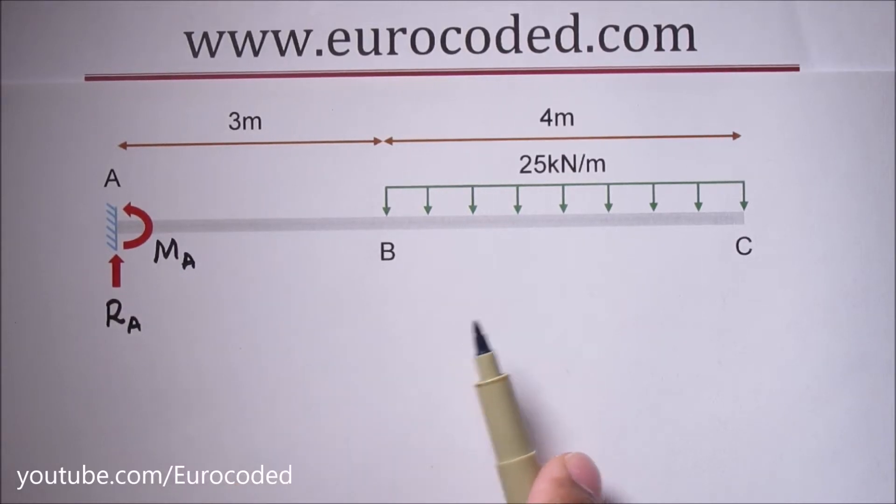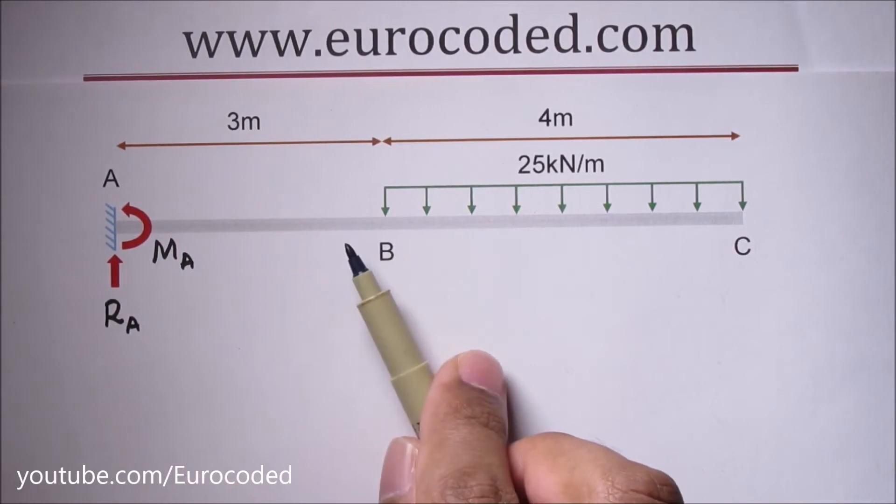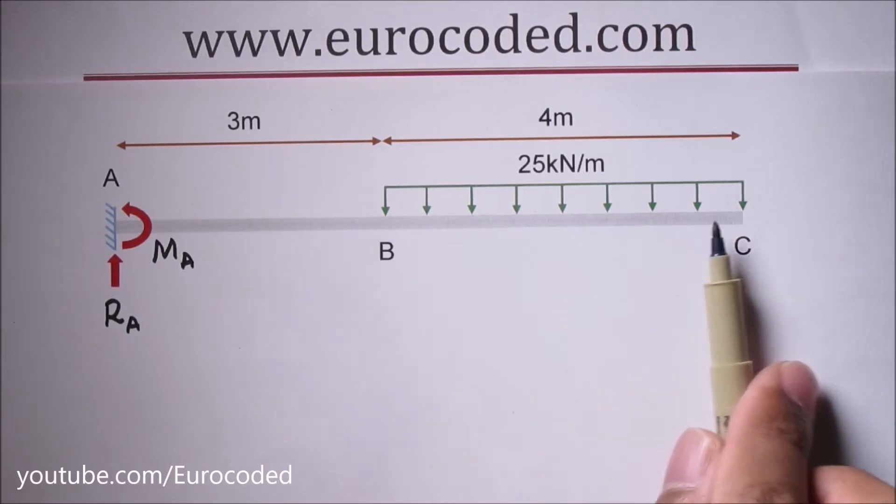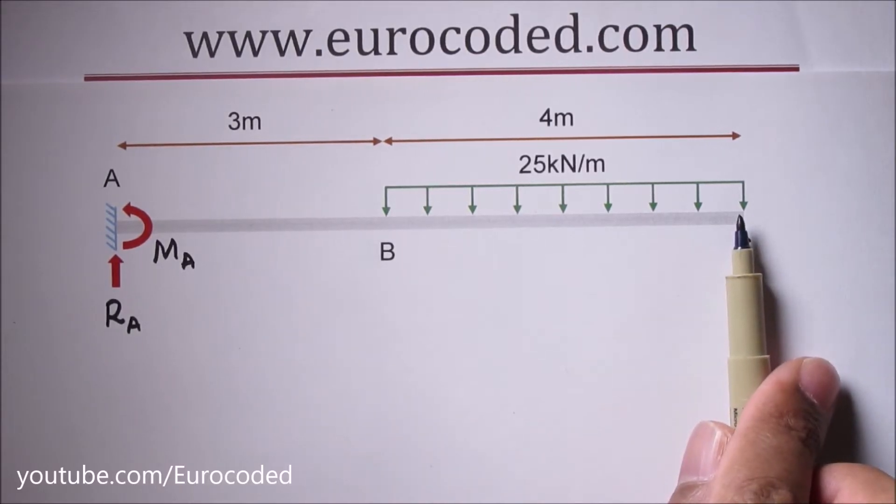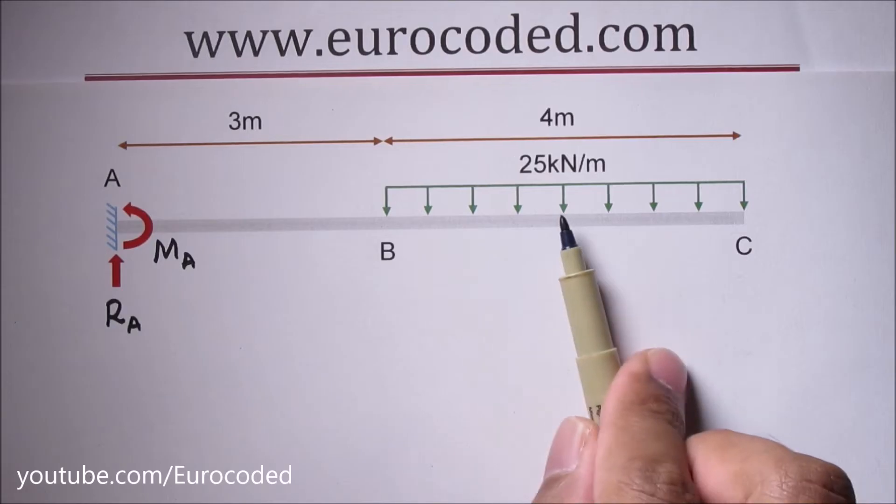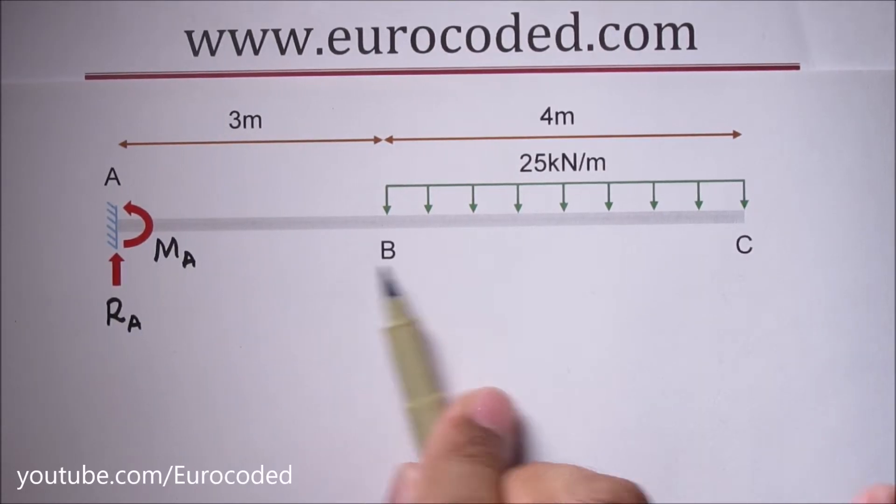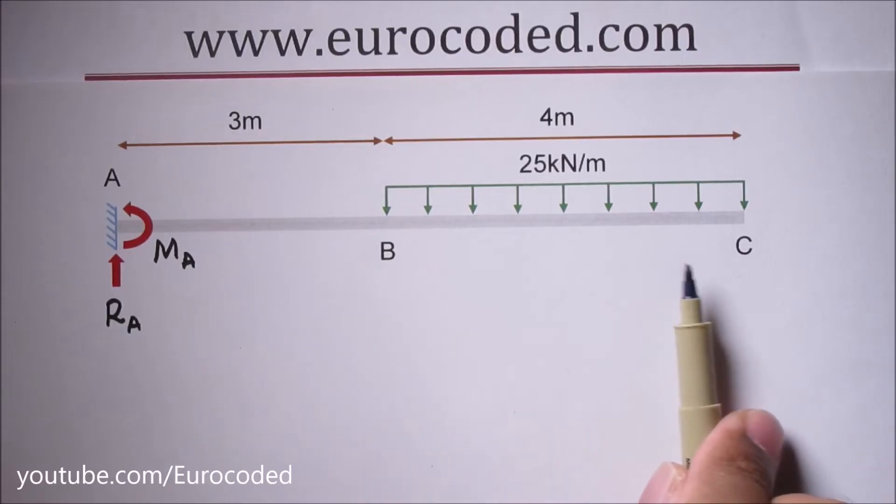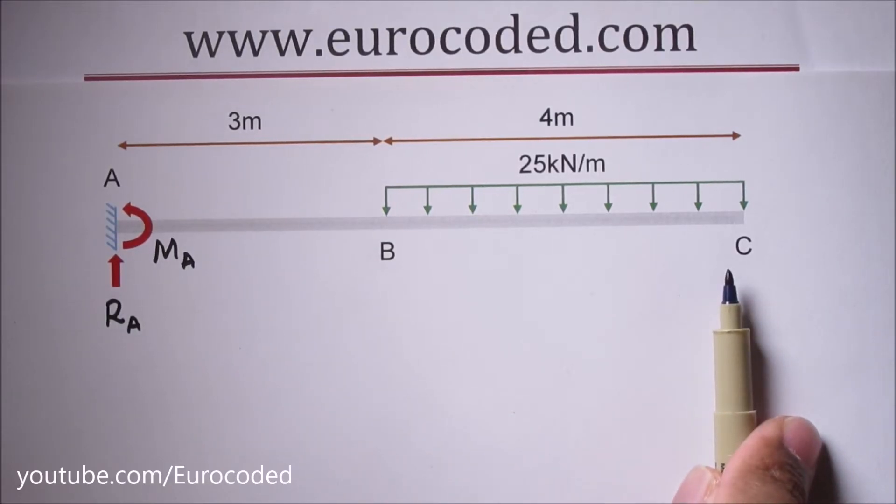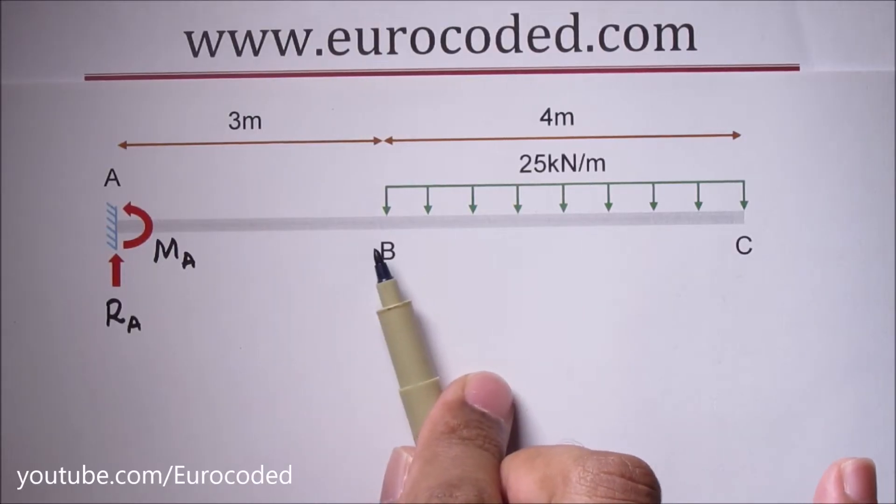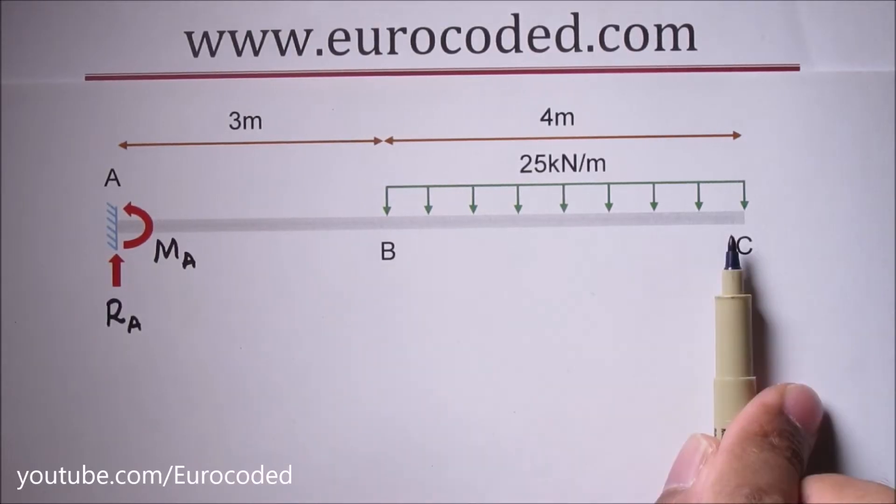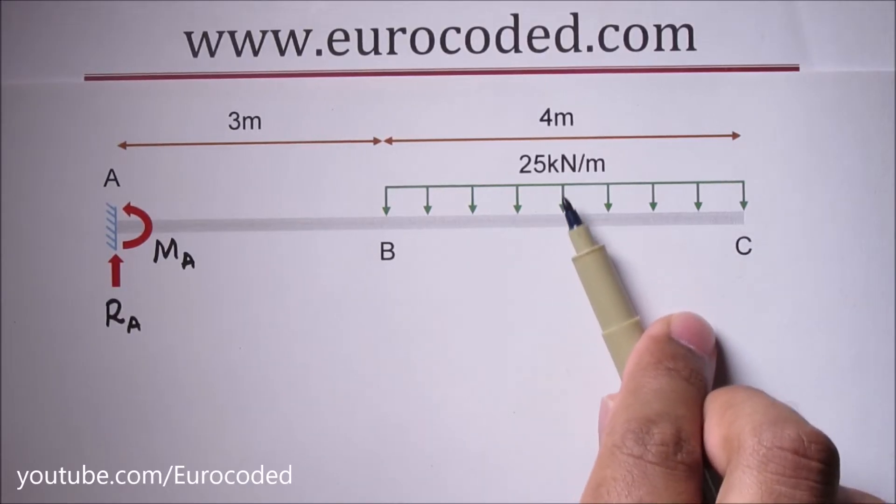To make the calculations relatively simple first we can replace this uniformly distributed load with an equivalent point load. In general the magnitude of the equivalent load or thrust of a distributed load is equal to the area under the stress distribution and it is located at the center of that stress distribution.